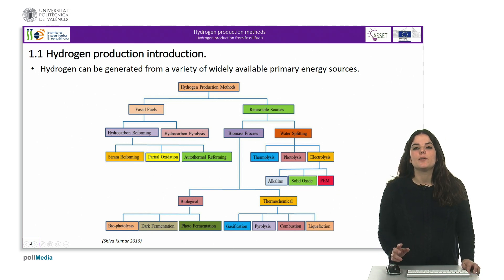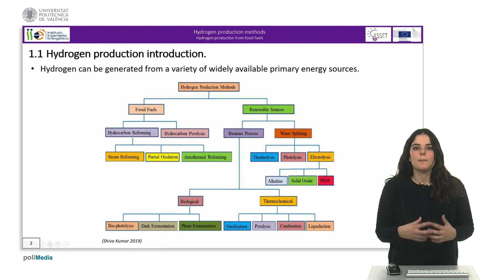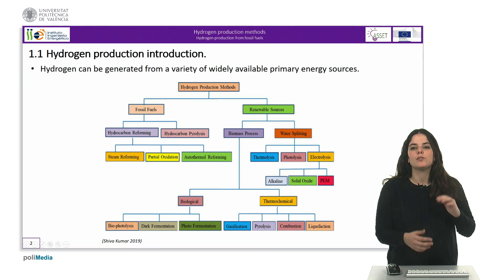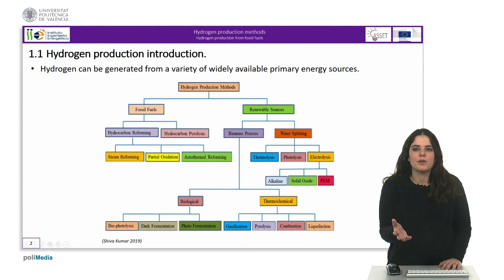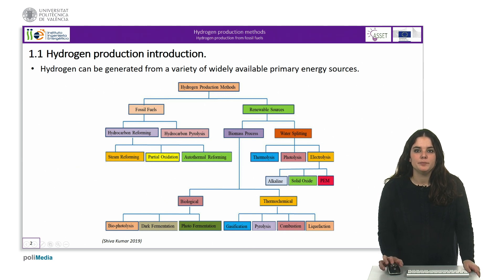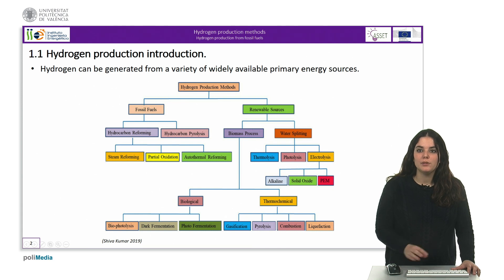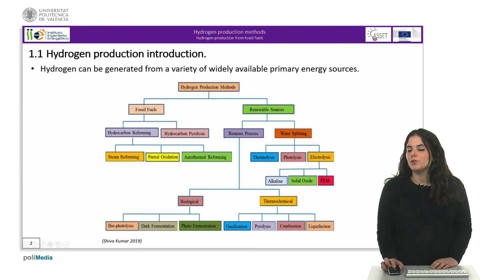Hydrogen can be generated from a variety of primary energy sources. In general, any substance in which hydrogen appears in the composition may serve as a possible source for obtaining hydrogen. For example, it can be produced from water or hydrocarbons as well as organic matter of plant or animal origin. Depending on the type of energy source used, we can classify these methods in two categories: production from fossil fuels and production using renewable sources.